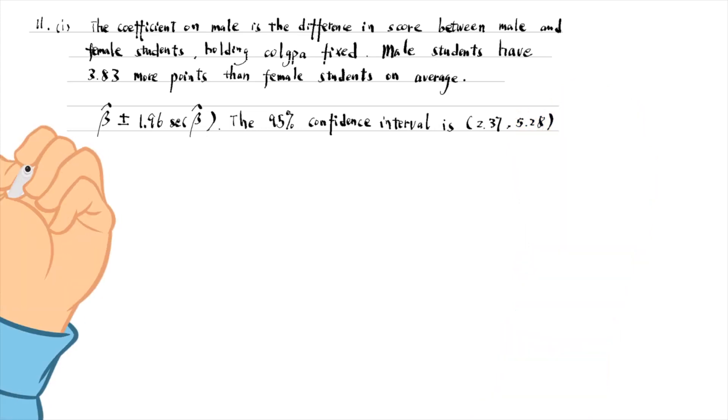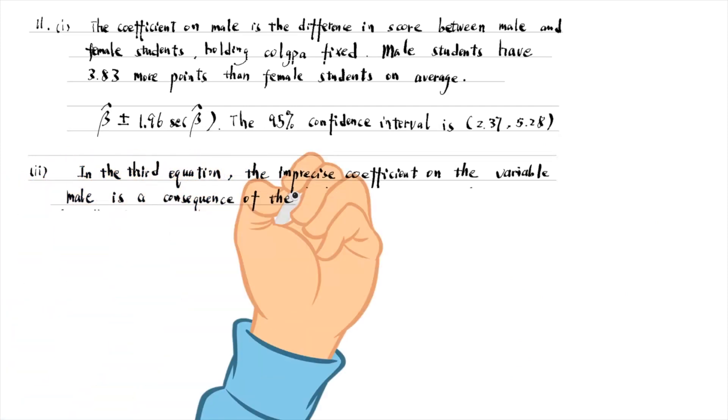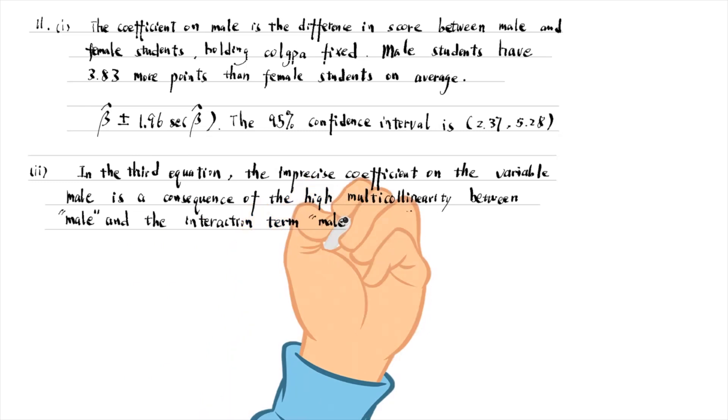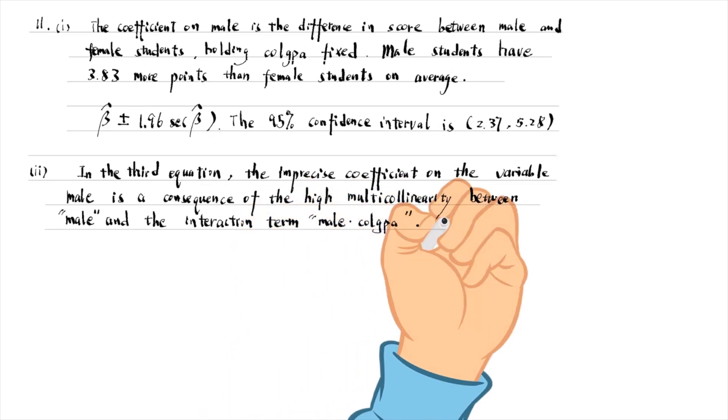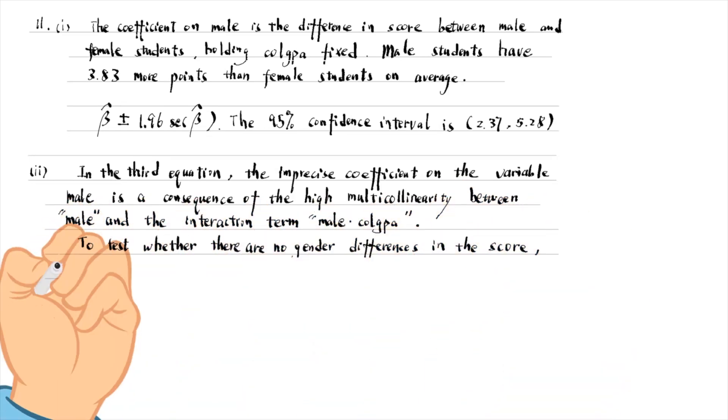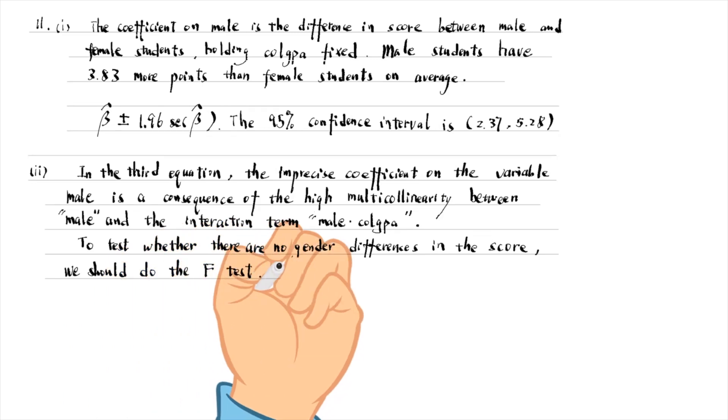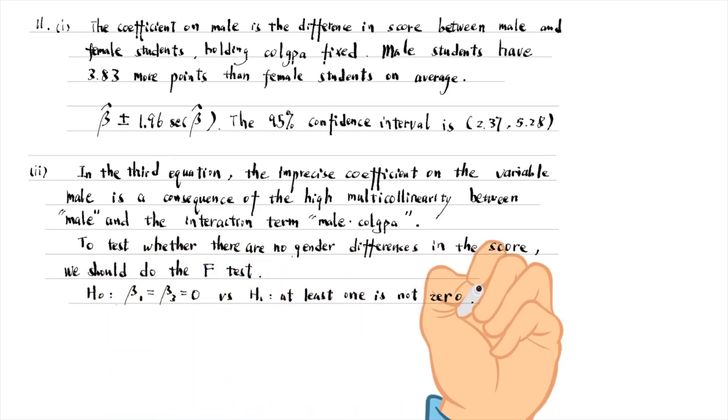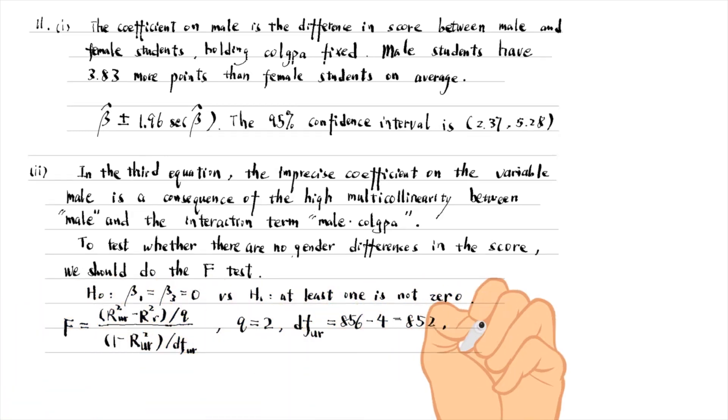In the third equation, the imprecise coefficient on the variable male is a consequence of the high multicollinearity between male and the interaction term male times college GPA. The multicollinearity makes the standard error for the variable male large. Another reason is that the estimate and standard error are at the point college GPA is 0, which is outside the range of the sample. But to test whether there were no gender differences in the score, we should conduct the F-test. The null hypothesis is that both the coefficients on the variable male and the interaction term are 0. We could use the F-statistic formula to compute it. The number of restrictions is 2. The degree of freedom in the unrestricted model is the sample size minus the number of estimates. That is 852.